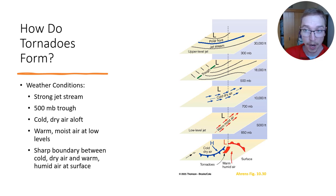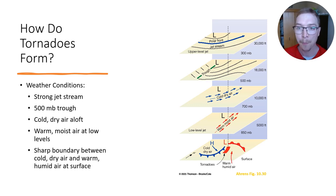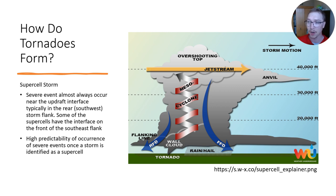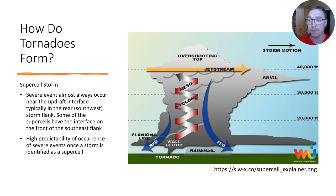When weather conditions are just right — a strong jet stream, a trough around the 500 millibar level, cold dry air aloft, warm moist air at low levels, and a sharp boundary between cold dry and warm humid air at the surface — you can start to develop a storm that could produce a tornado, leading to the development of what we call supercells. Mesocyclonic thunderstorms are also known as supercells — a violent thunderstorm in which the entire storm or cell complex is rotating, which gives it a predisposition to spawn tornadoes.